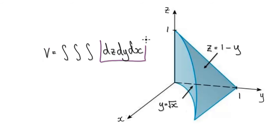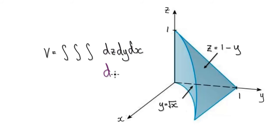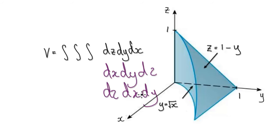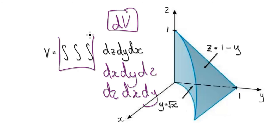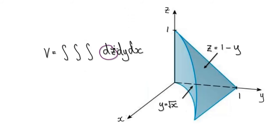We can set up dV as dz dy dx, or you can do it as dx dy dz — whichever way you want — as long as the limits of integration are correct. So I'm going to use dz dy dx.